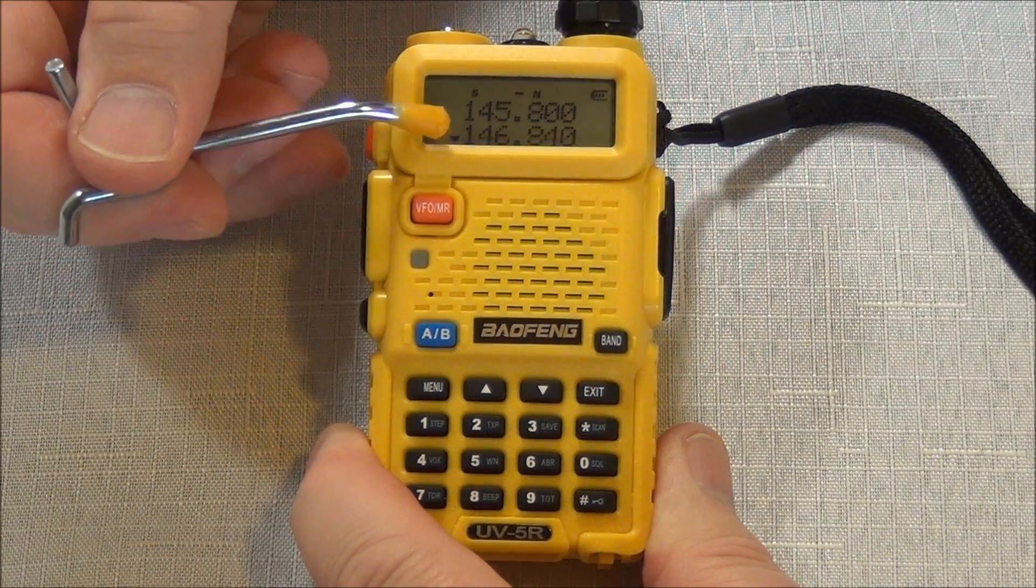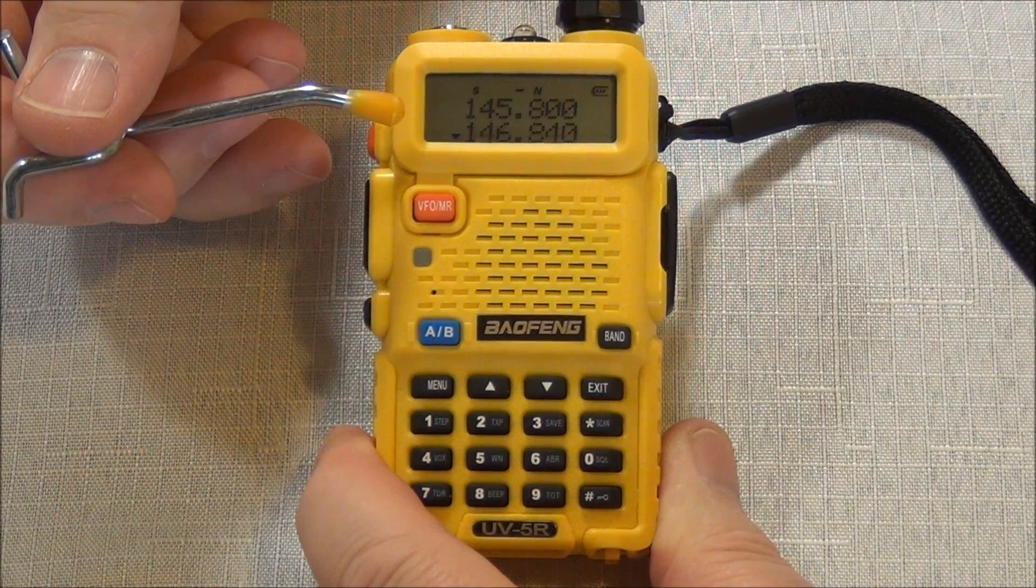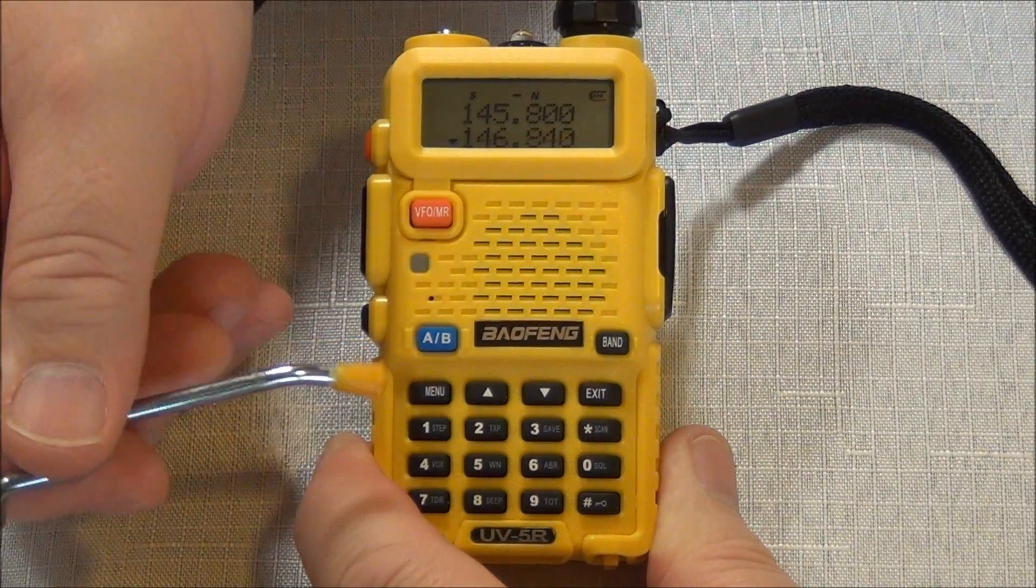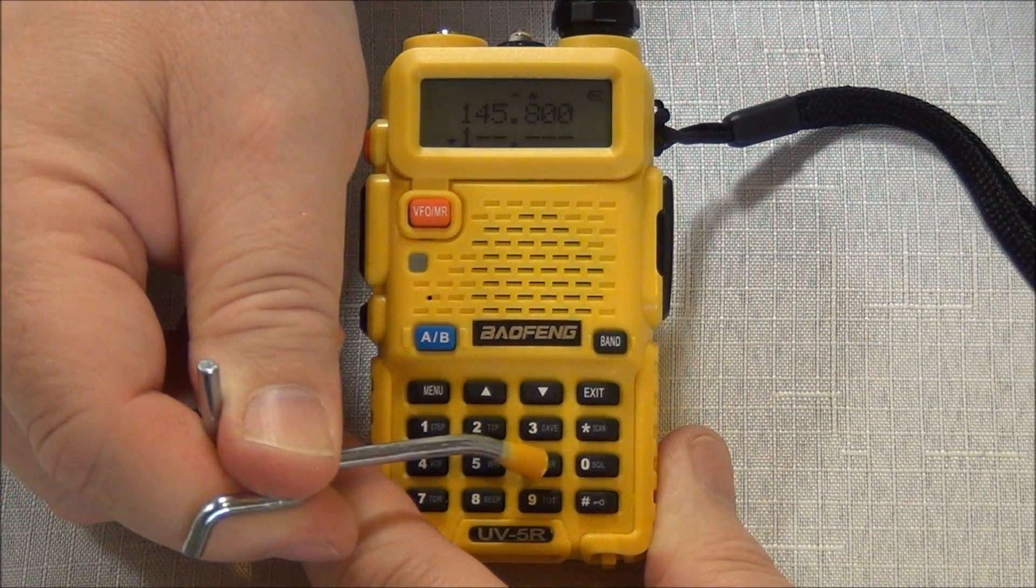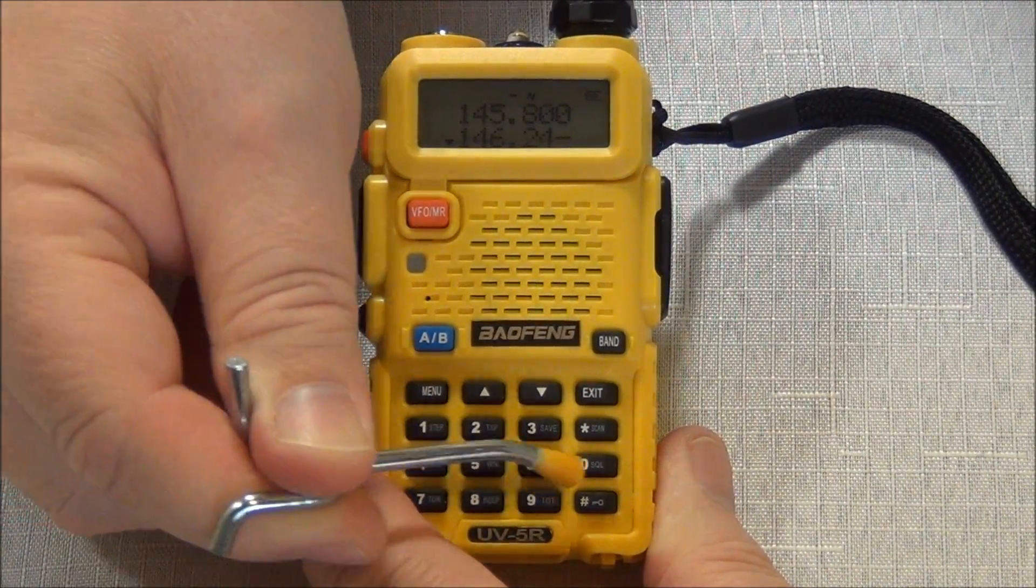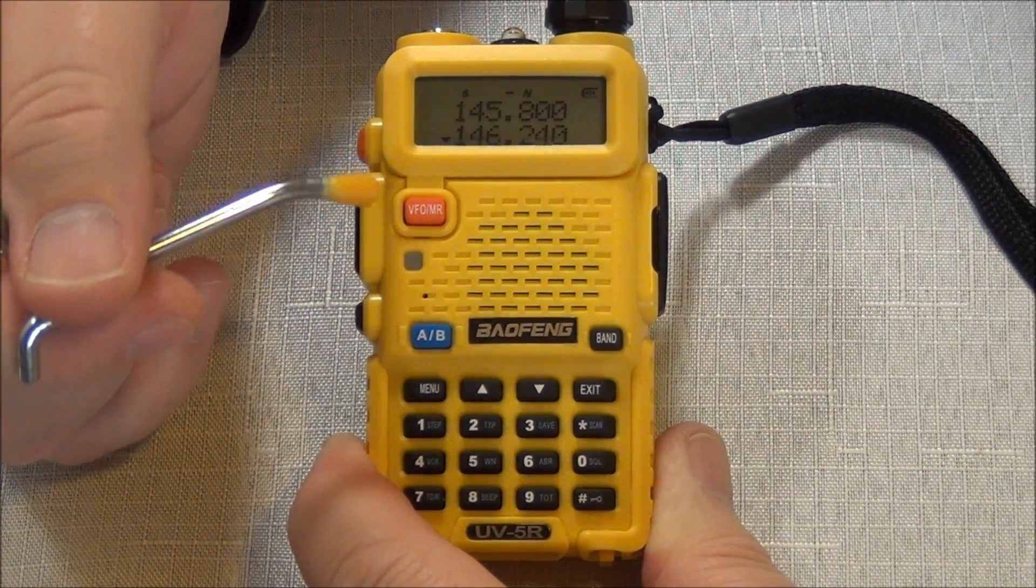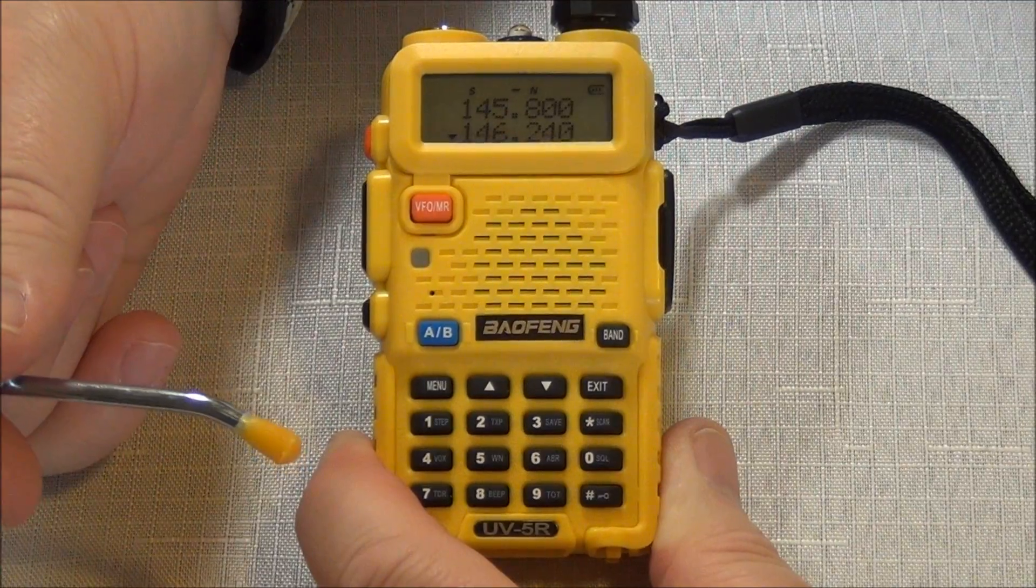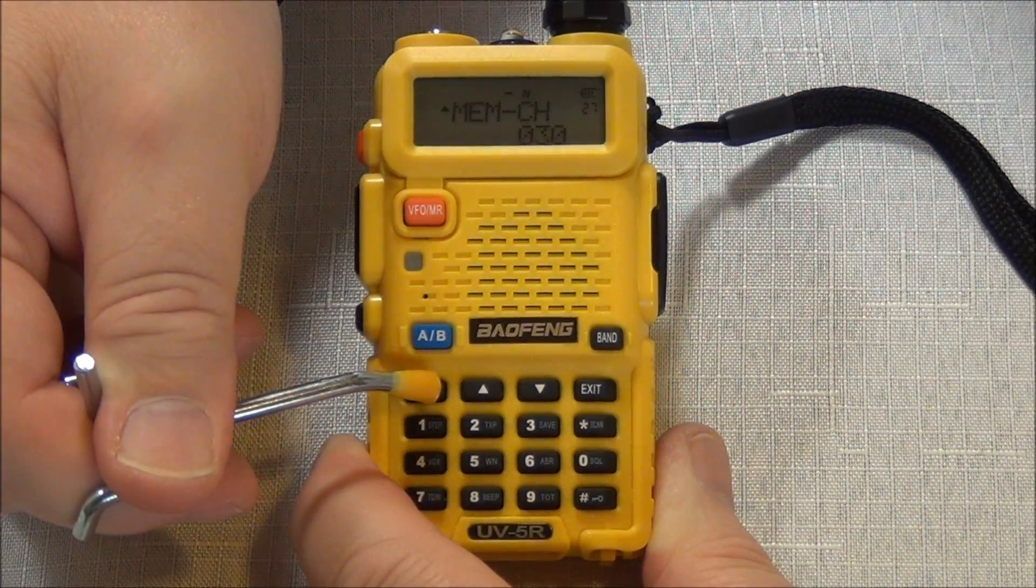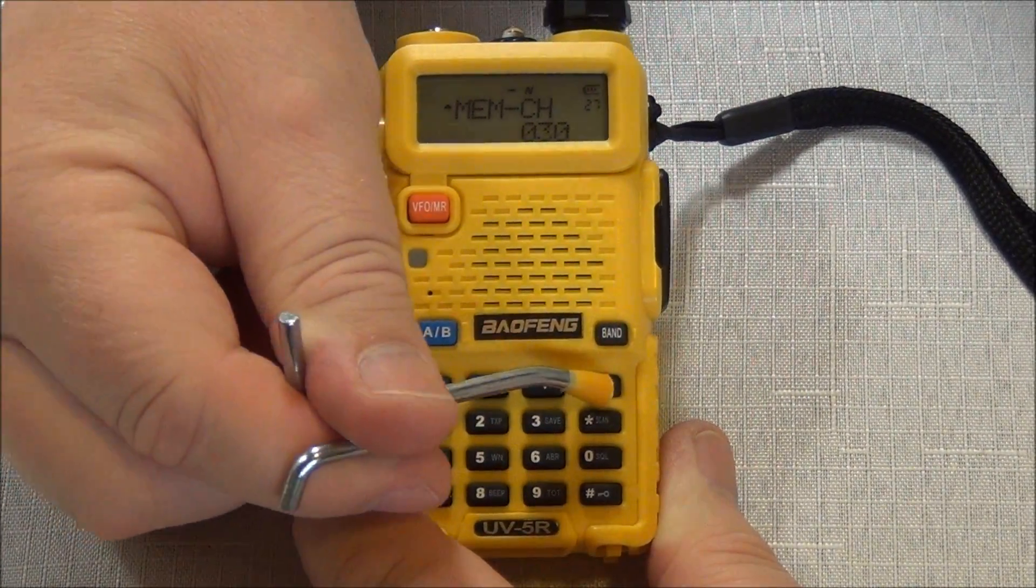The only way to do that is to make sure you're in the VFO mode. And here you have to manually do the math in your head and realize that if you're programming 146.840, your transmitter is transmitting on 146.240. So we have to go to that frequency: 146.240. And we save this frequency again into memory channel 30. So I go menu. I'm already at menu channel 30. So I go menu to enter channel 30. I do menu to save and exit.